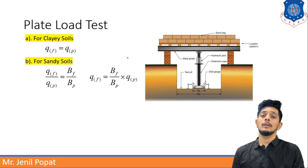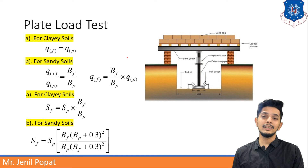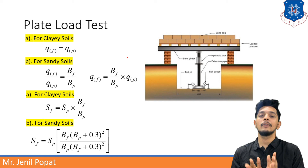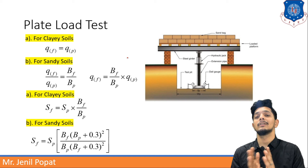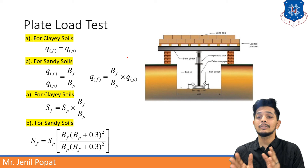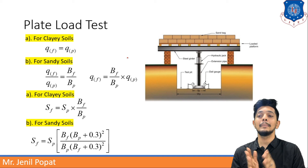For settlement: in clayey soils, SF = SP·(BF/BP). For sandy soils, SF = SP·[(BF·(BP + 0.3))/(BP·(BF + 0.3))]². Plate values are used to find foundation settlement values — this is the crux of this test. However, the test has limitations: the scaling effect can reduce accuracy of results, and human errors in judgment may cause the foundation to behave differently than assumed.